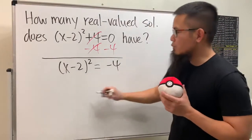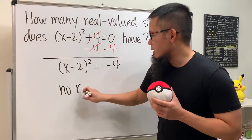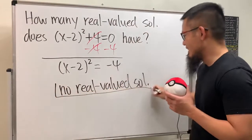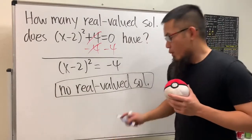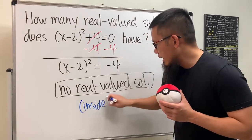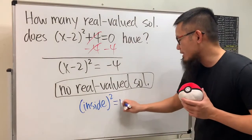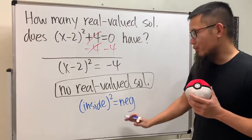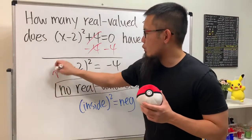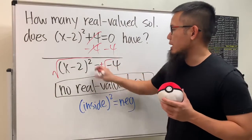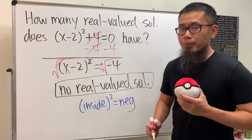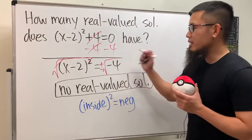As we can see, we have this square equal to a negative number — this has no real value solutions. Whenever we have an equation with x inside squared, and the right hand side is equal to a negative number, it's game over — no real value solutions. The reason is that if you continue, you take the square root on both sides, and don't forget the plus or minus, but the square root of negative 4 is not real. We are not using complex numbers here, so this has no real value solutions.